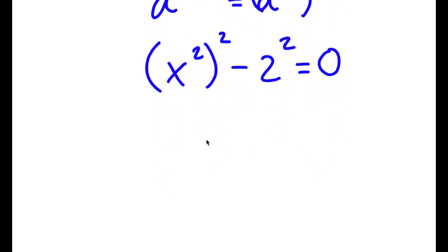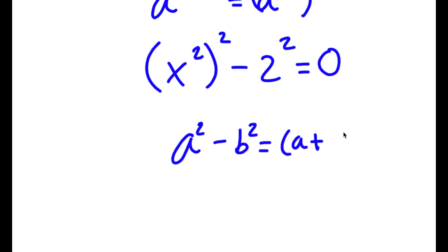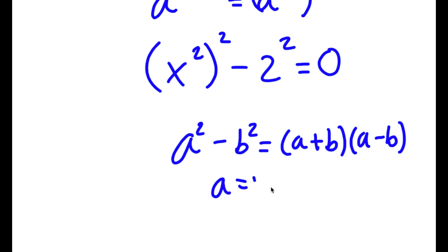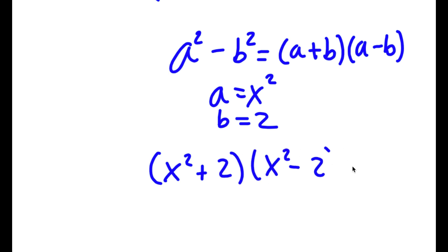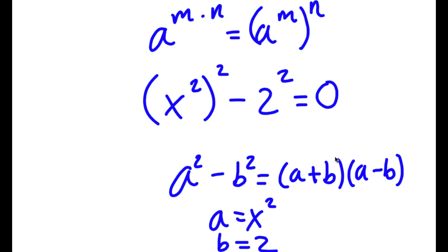Now if I have something in the form a squared minus b squared, this equals a plus b times a minus b. In this case a is x squared and b is 2, so now I have x squared plus 2 times x squared minus 2 equals 0.